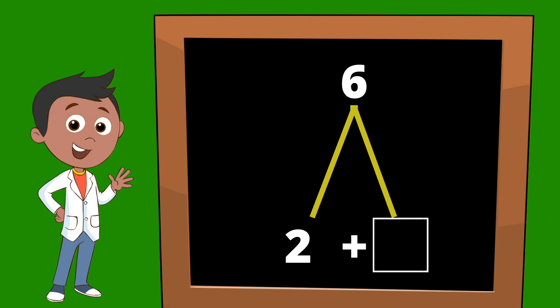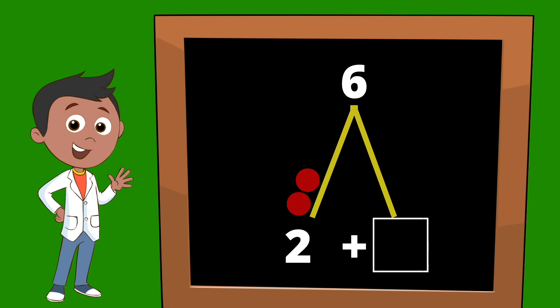To solve this equation, we start with what we know. We know we're going to start with two, so on the left side of our mountain we're going to add two circles: one, two. What else do we know? We know that in the end we're going to have a total of six dots. So we're going to add dots until we get to the number six, and those are going to go on the right side of our Math Mountain, counting on from two until we get to six.